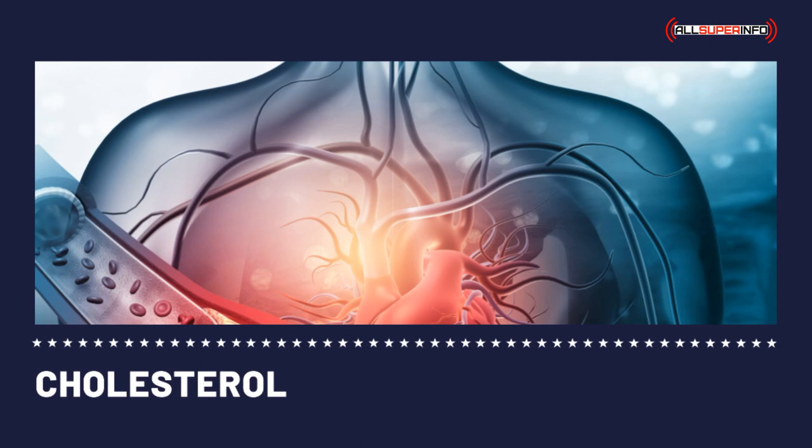Cholesterol is measured by milligrams of cholesterol per deciliter of blood, mg/dL. Most of the time when you're tested for cholesterol level, the total cholesterol is given, and sometimes you are also given the HDL cholesterol and total cholesterol results. The desirable total cholesterol level is 200 mg per deciliter, and the beneficial amount of HDL is more than 40 mg per deciliter.